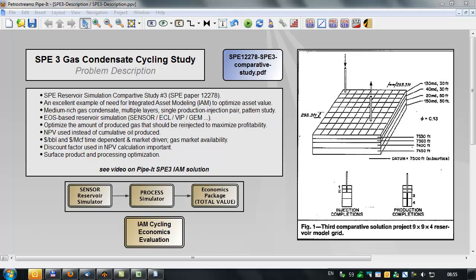The problem itself is a reservoir with a medium-rich gas condensate. There are multiple layers with heterogeneity. Permeability is ranging from about 20 to 150 millidarsies. It's a pattern model, seven by seven by four numerical reservoir grid.